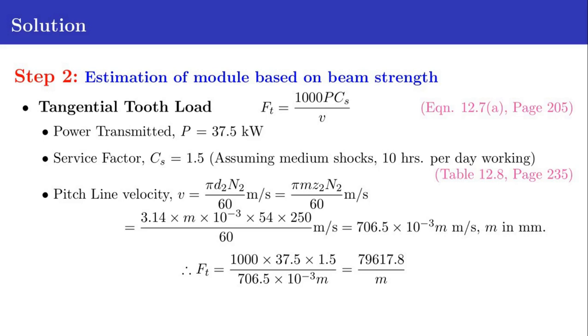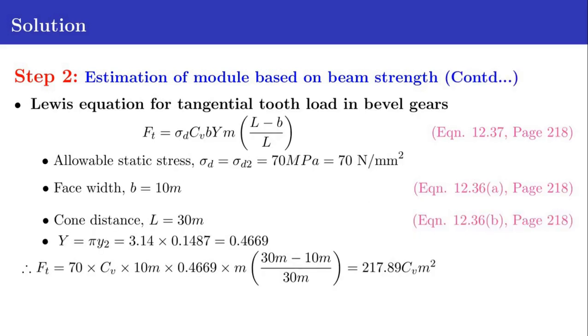V equals pi times D2 N2 divided by 60 meters per second. D2 equals M times Z2. Currently we don't know the value of module M, so we leave M as it is. Thus the pitch line velocity V equals pi times M times Z2 times N2 divided by 60. Substituting the values of Z2 and N2, we obtain V as 706.5 times 10 raise to minus 3 M meters per second, where M is in millimeters.